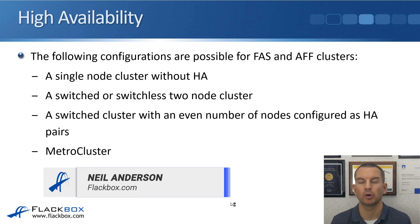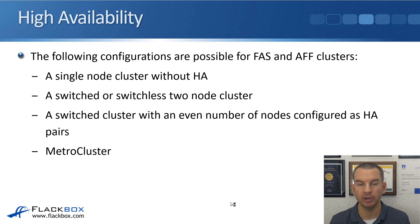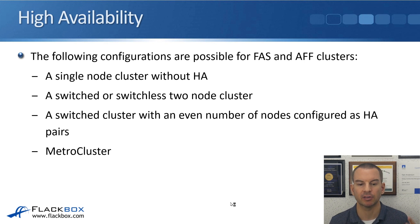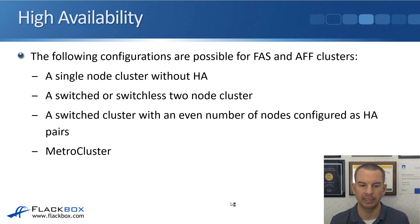The following configurations are possible for FAS and AFF clusters. You can have a single node cluster without HA — that is not commonly used because you've got a single point of failure. You can have a switched or switchless two-node cluster, where the switch refers to the cluster interconnect switch. You can have a switched cluster with an even number of nodes configured as HA pairs. When you have a switched or switchless two-node cluster, those two nodes will also be configured as an HA pair. And finally, you can have metro cluster, which we're going to cover in a later lecture.